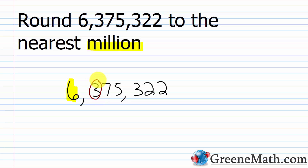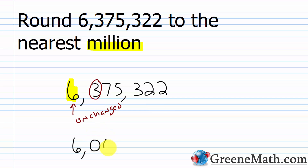3 falls in the category of 4 or less. So when this happens, you want to leave your digit in the roundoff place unchanged — so this 6 will be unchanged. And then you're going to replace every digit that follows the digit in the roundoff place with a 0. So essentially 0, 0, 0, 0, 0. So 6,375,322 rounded to the nearest million is 6 million.